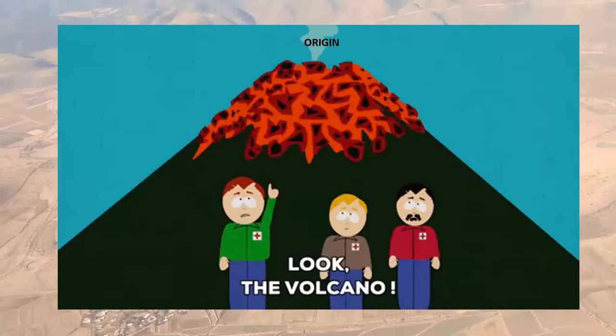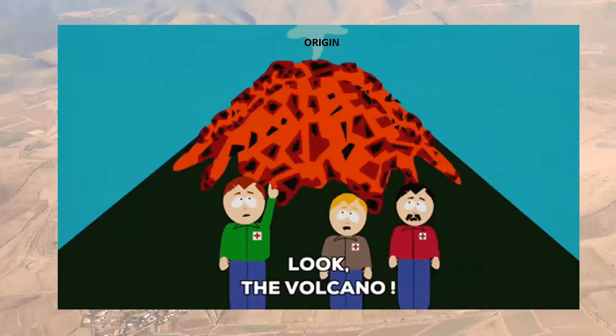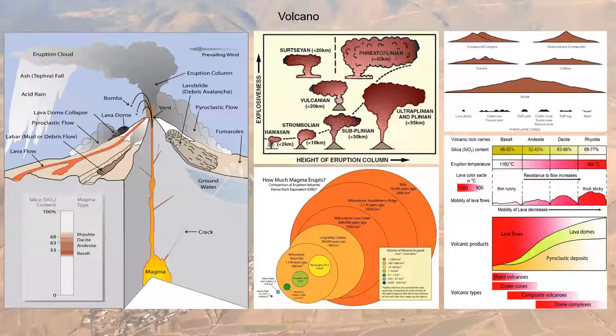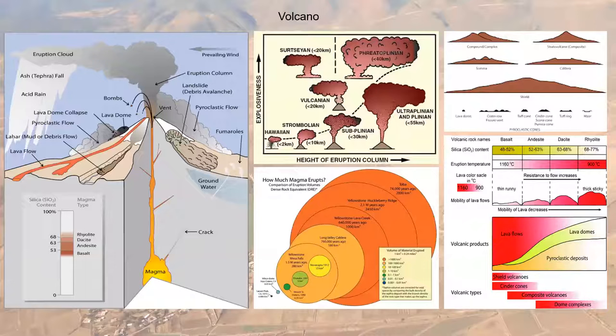Let's talk about volcanoes. Not everyone may know what a volcano is, its components and its products. Here you can see on the left-hand side a typical diagram of a volcano cross-section showing different components and products. Based on the components and products, there are different types of volcanoes, different types of eruptions, and different types of volcanic cones.